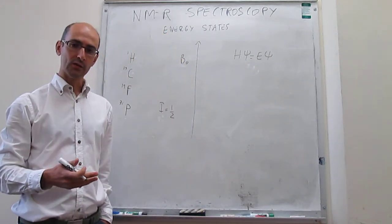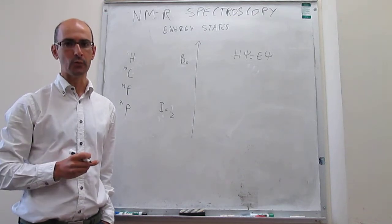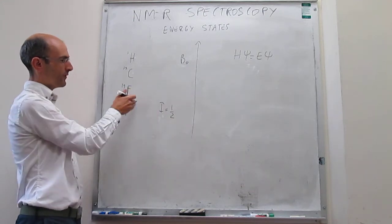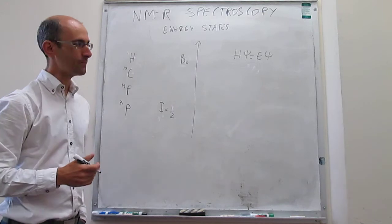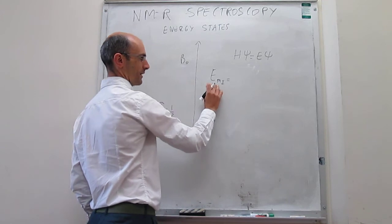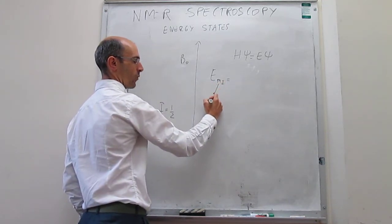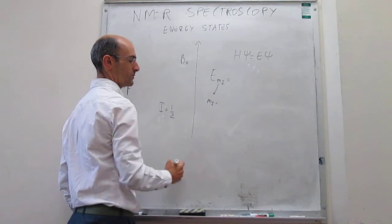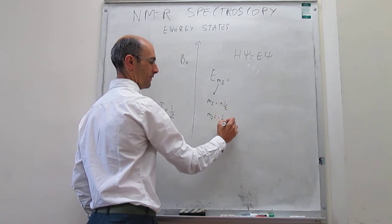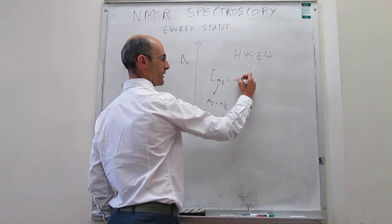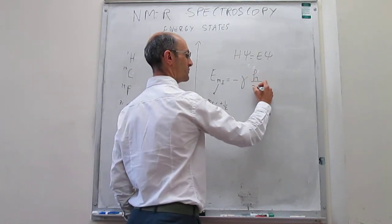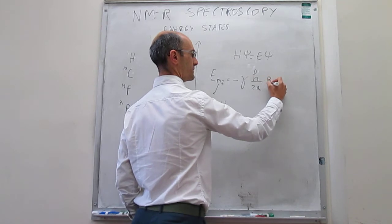We're not going to solve this expression — we're just going to look at the solutions and see what we can learn from them. For nuclei that have a total spin of one-half, it turns out that the energy of those two spinning motions — we're going to call it m_I, the quantum number that tells you the spinning motion — can be either plus one-half or minus one-half. The energy is equal to minus gamma times h over 2π times B-naught times m_I.